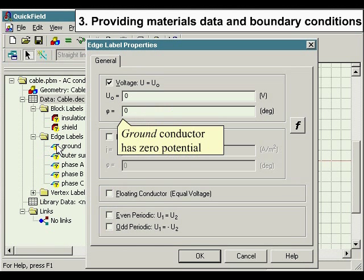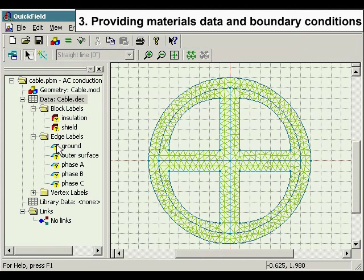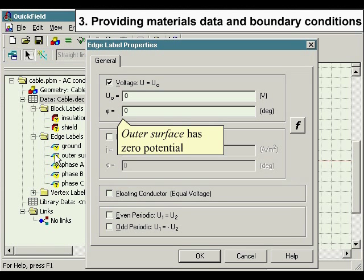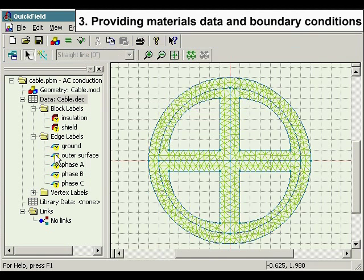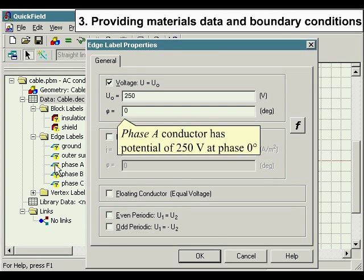Ground conductor has zero potential. Outer surface has zero potential.